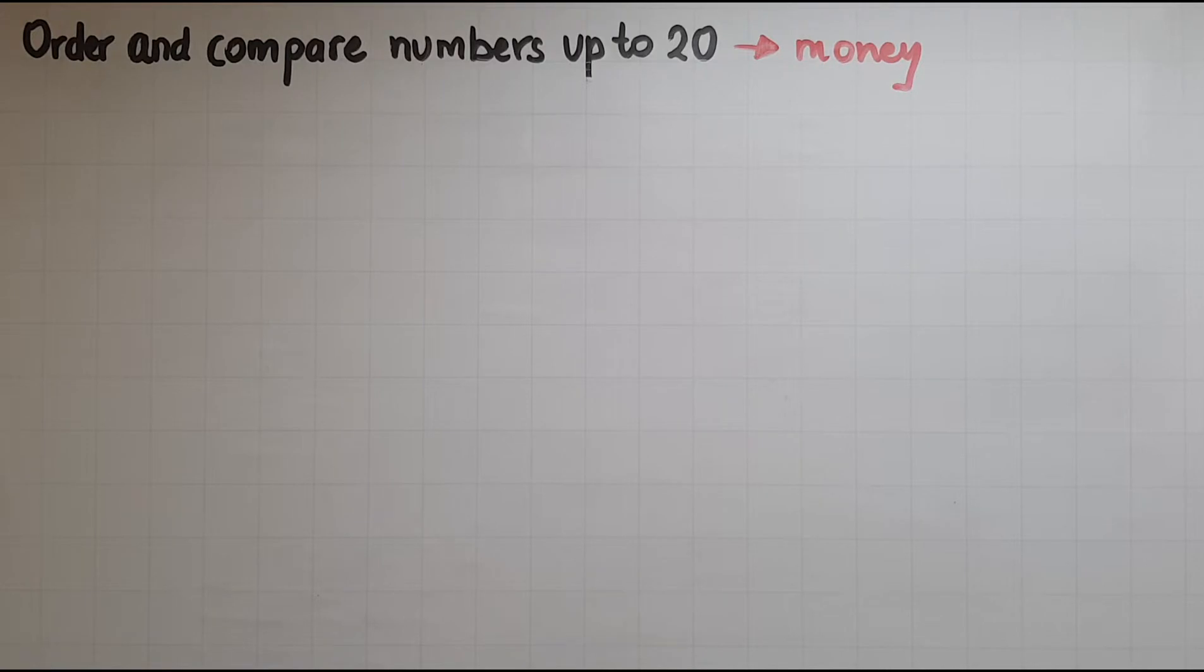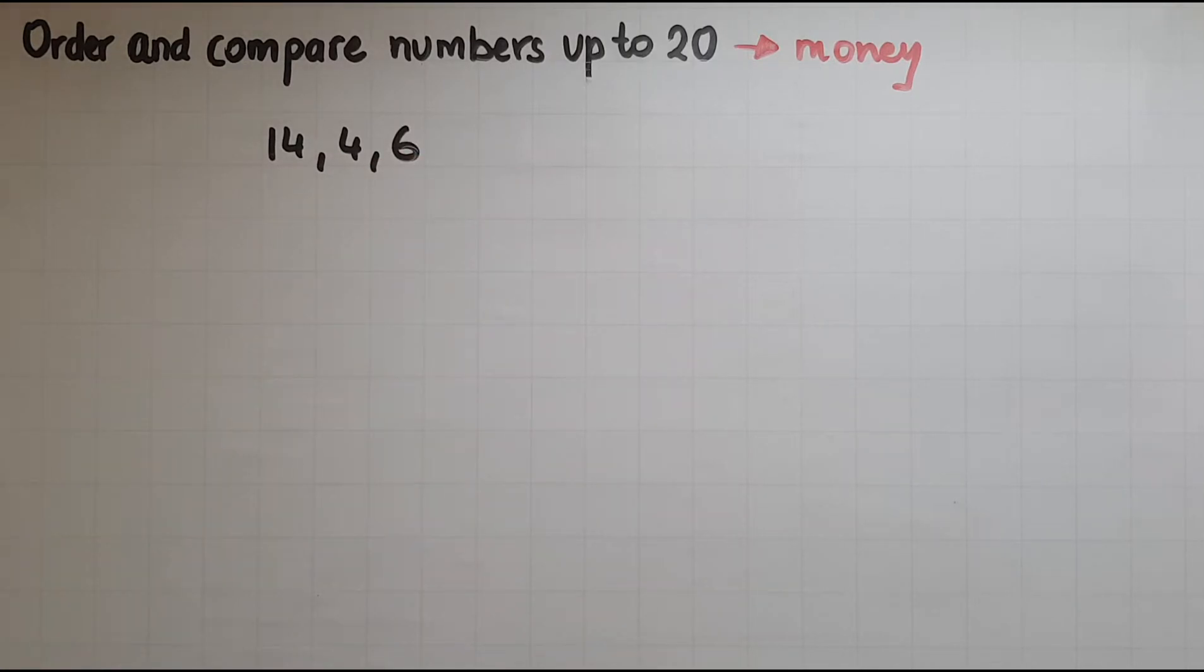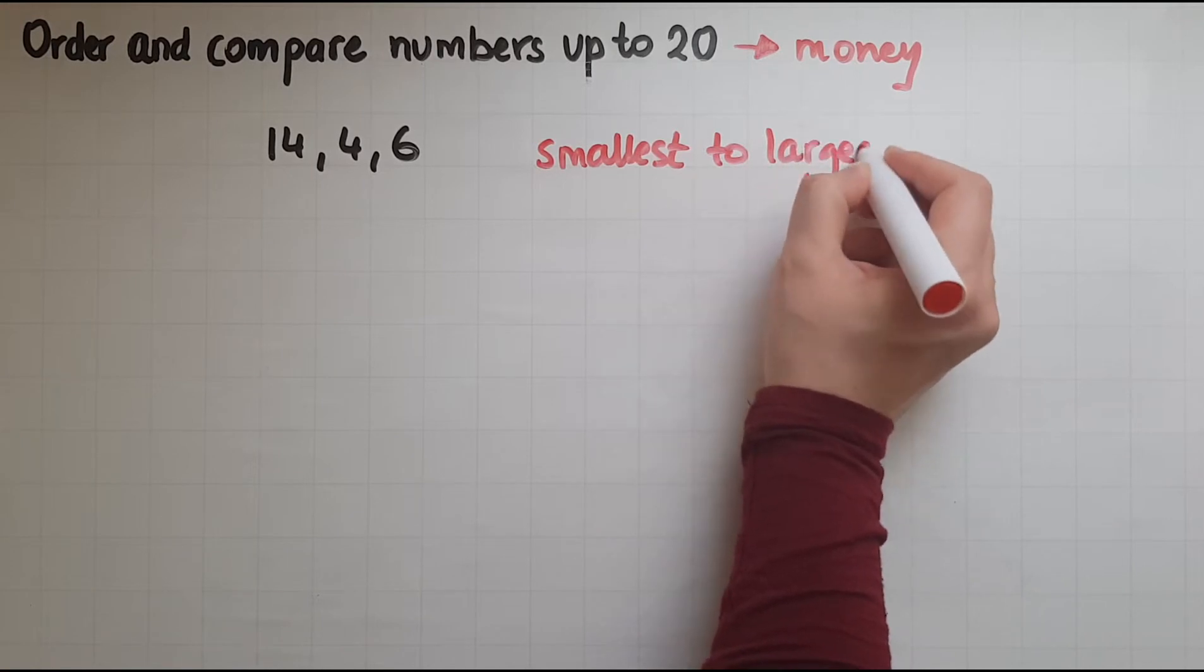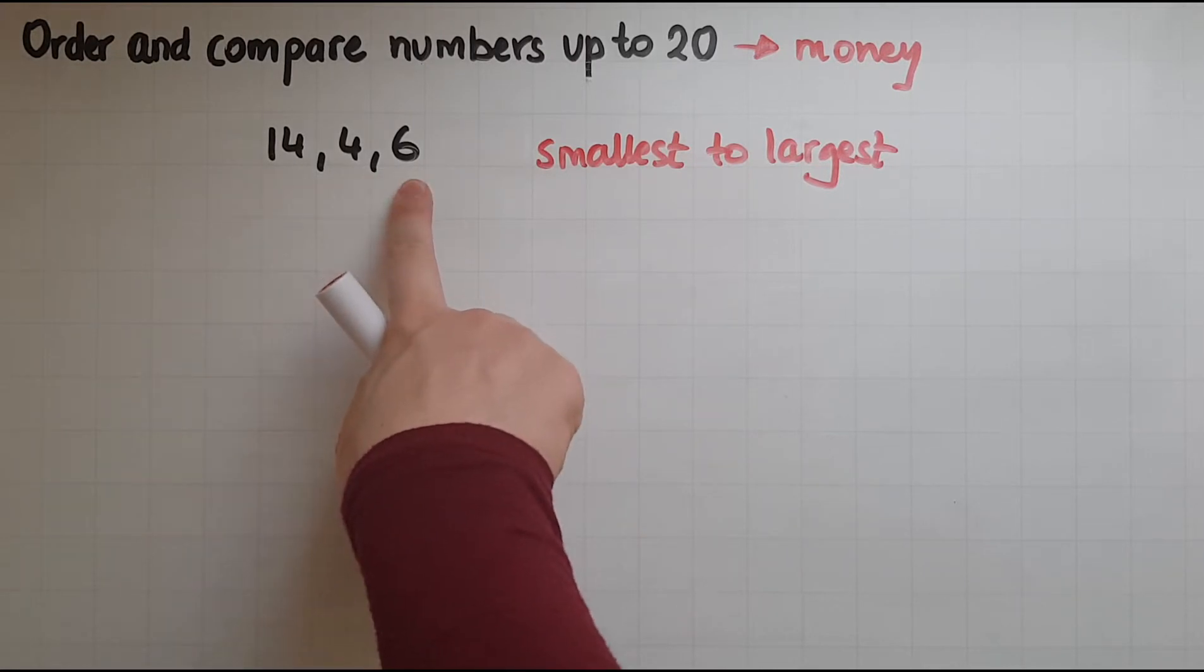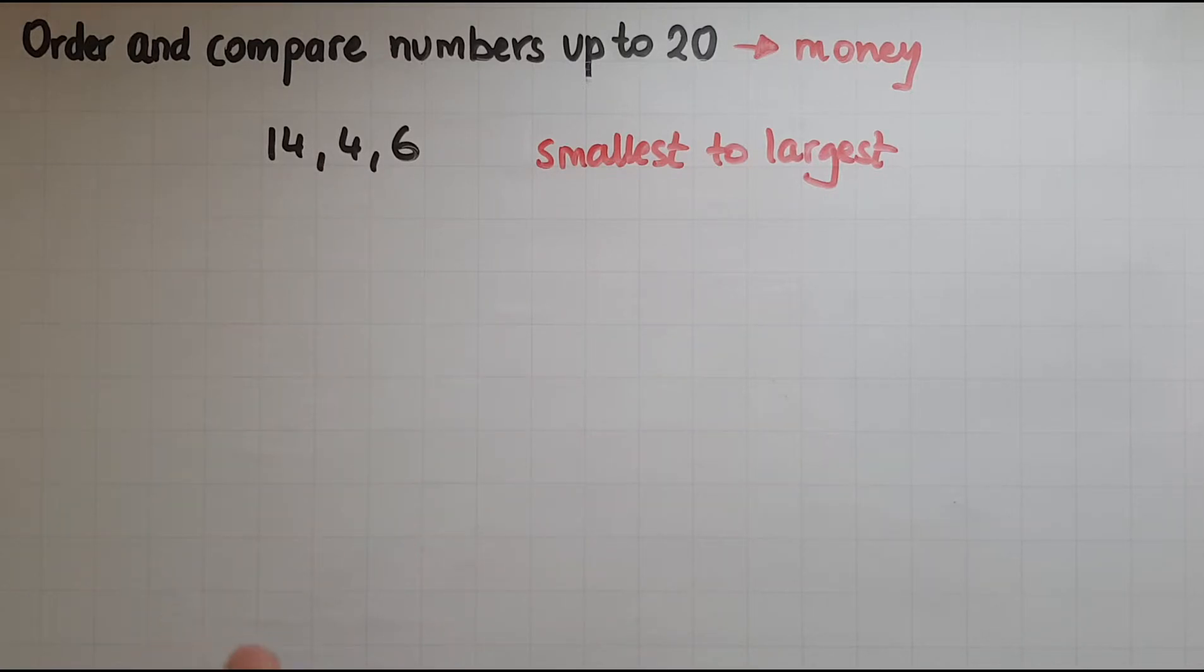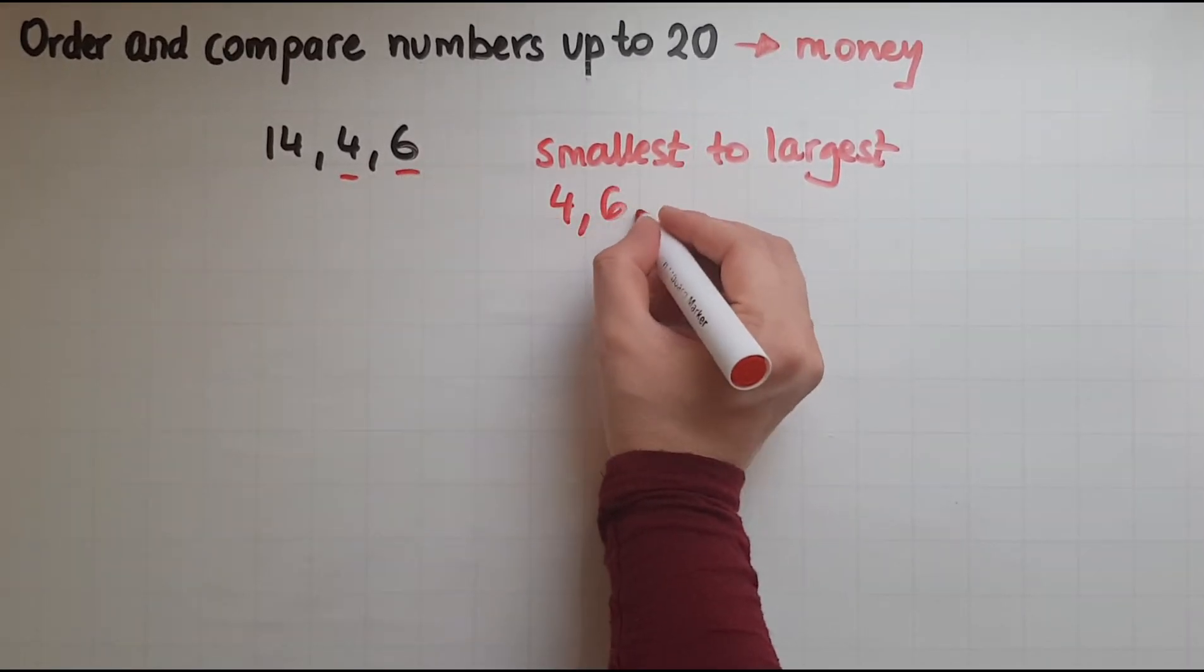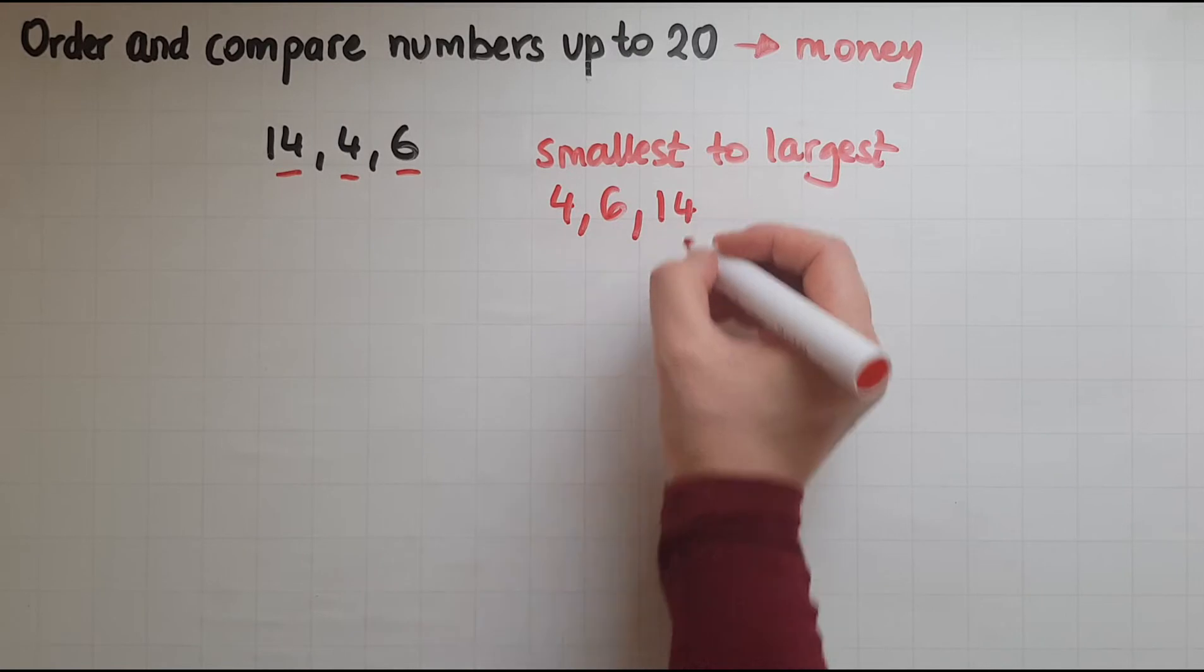I will write three numbers: 14, 4, and 6, and we'll order them from the smallest to largest. If I look at them, I can see that if I counted numbers, 4 would come first. So 0, 1, 2, 3, 4, 5, 6, 7, 8, 9, 10, 11, 12, 13, 14. So the last one is 14.